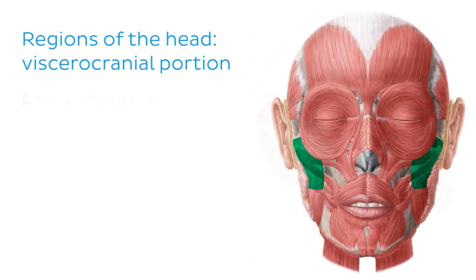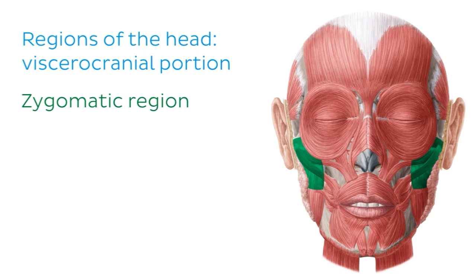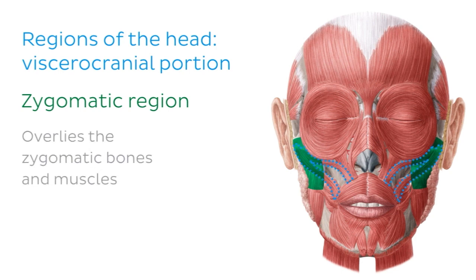The fifth and final bilateral region of the face is the zygomatic region. This region overlies the zygomatic bones and muscles, which are roughly outlined in the image. The zygomatic region is the area of the face where we find the so-called cheekbones.